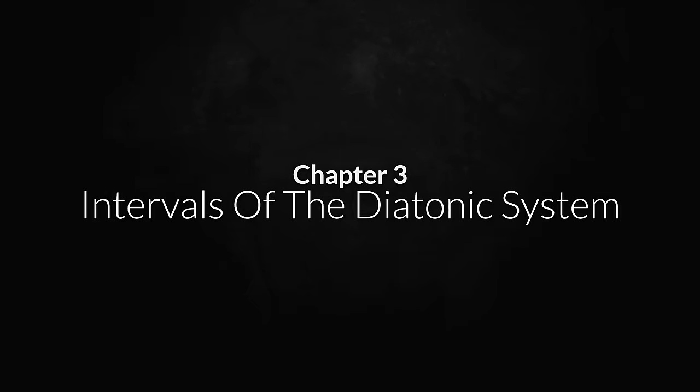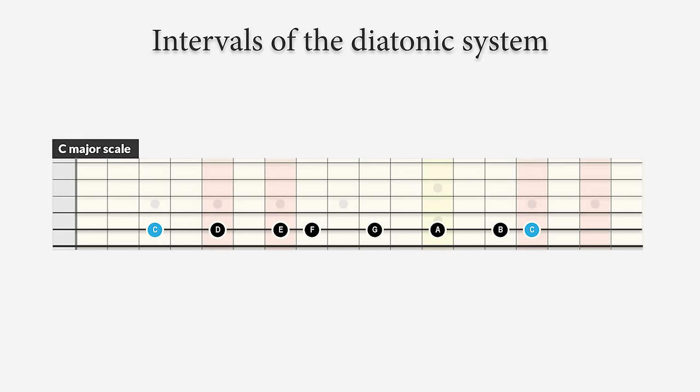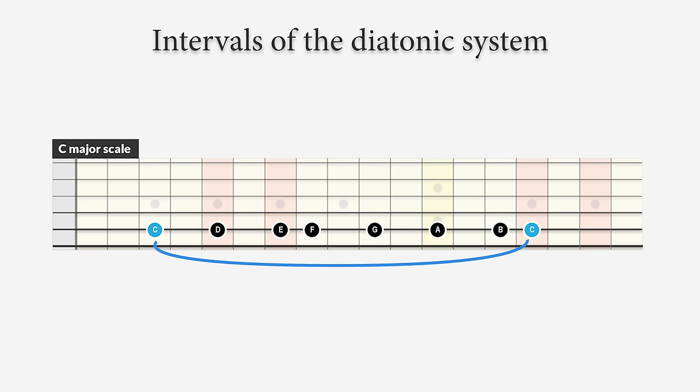In the C major scale we find seven notes: C, D, E, F, G, A, and B. We can extract seven intervals if we compare all the notes of this scale one by one with the tonic C.